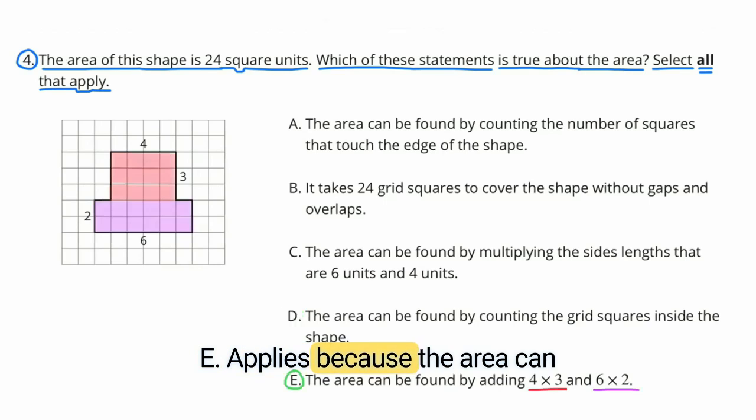E applies because the area can be found by adding 4 times 3 and 6 times 2. It's kind of like what I was talking about in example C, multiplying the base times the height of quadrilaterals. I've identified two quadrilaterals within this shape. One with dimensions of 4 times 3 and the second one with dimensions of 2 times 6. 4 times 3 is 12 and 2 times 6 is 12. 12 plus 12 is 24 units.